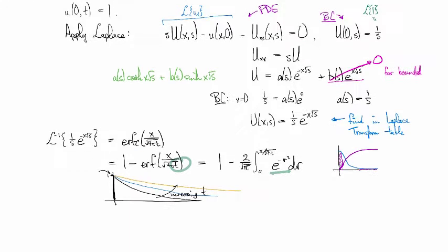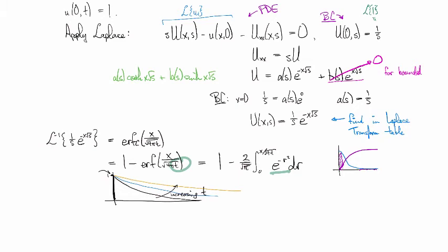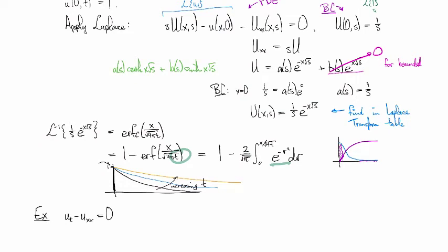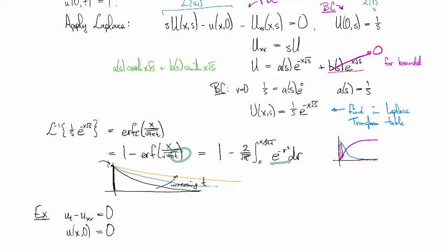And so now that we've solved this in the special case, we can consider what it would look like in general. So if we had the same initial condition of clear, pristine water, and now we dump at x equals zero, we dump in effluent at some non-constant rate f(t).